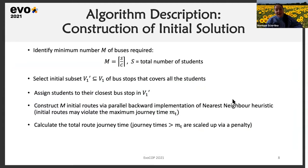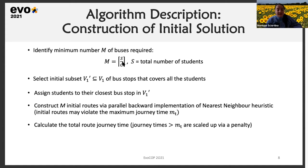Moving on to the algorithm description: the algorithm has several phases. First, we construct an initial solution, and then we try to improve this initial solution and to destroy and repair the solution to achieve alternative solutions. For the construction phase, the first step is to identify the minimum number of buses required to cater for all the students in that instance, using the equation that divides the total number of students by the bus capacity C, taking the ceiling of that value.